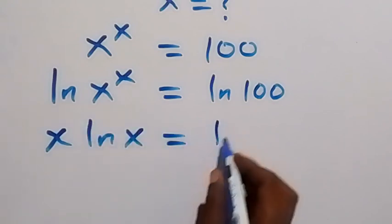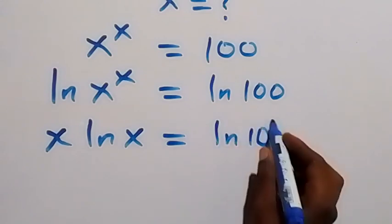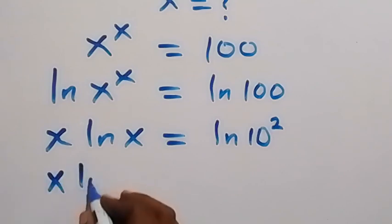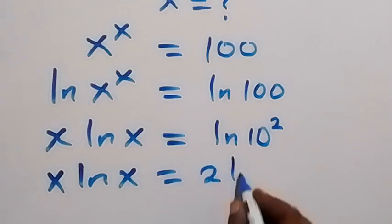...ln 100. Let's write ln 100 as ln 10 squared. Then also in the next step, we can take this 2 to the back here, so we have x ln x equals to 2 ln 10.